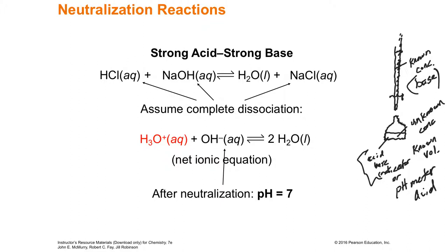Then I'm going to plot a curve called a pH titration curve. It's going to measure the pH — originally of the acid, then as you start pouring the base in, they come to an equivalence point, and then you end up with more base at the end. It's a curve that tells you the pH as this lab technique is going on. We'll come back to this in a minute.